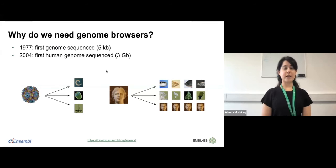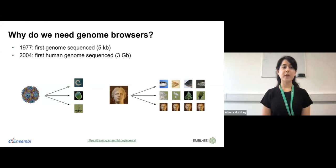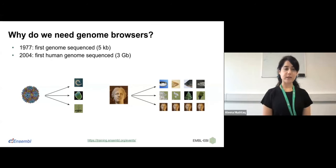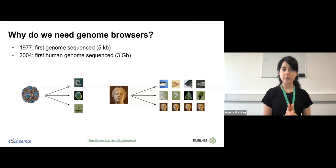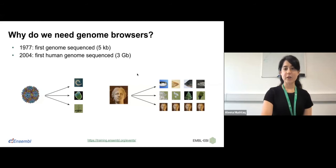To start with, a little background. The first genome was sequenced in 1977 by Fred Sanger and his team — this was a bacteriophage genome of about 5,000 bases. This paved the way for the sequencing of the human genome, which is a much larger genome of about three billion bases, completed in 2004. Since then, many other genomes have been added to Ensembl as well.